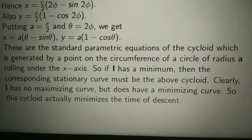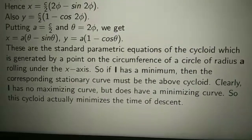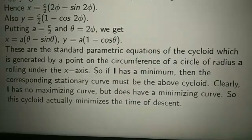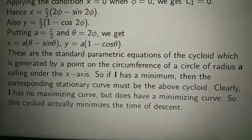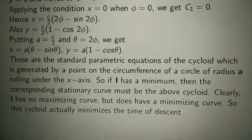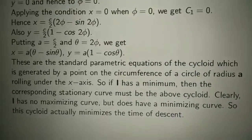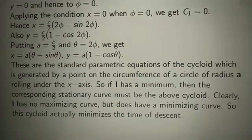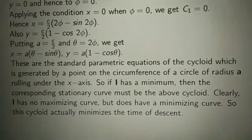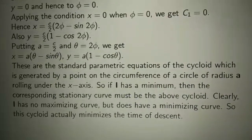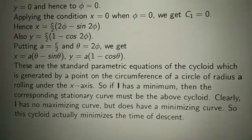So if I has a minimum, the corresponding stationary curve must be this cycloid. Since I has no maximizing curve but does have a minimizing curve, this cycloid actually minimizes the time of descent.